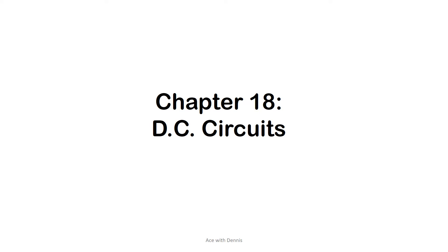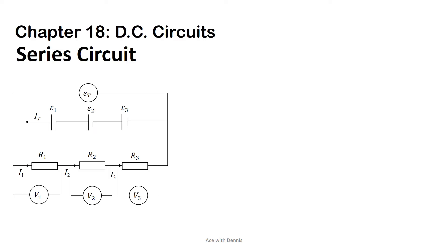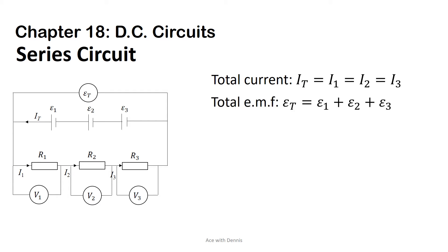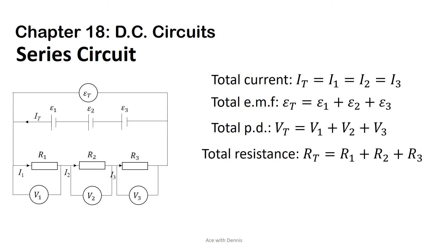Chapter 18: DC circuits. This diagram shows a series circuit where three resistances R1, R2, and R3 are connected in series. The total current: I_T equals I1 equals I2 equals I3. The total EMF: ε_T equals ε1 plus ε2 plus ε3. The total potential difference: V_T equals V1 plus V2 plus V3. The total resistance: R_T equals R1 plus R2 plus R3.